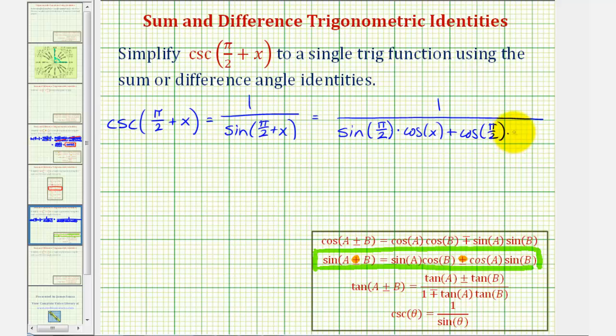We should recognize that sine pi divided by two is equal to one and cosine pi divided by two is equal to zero.